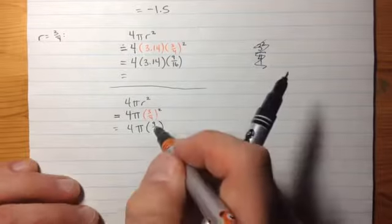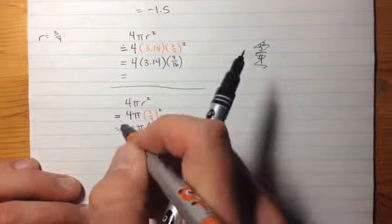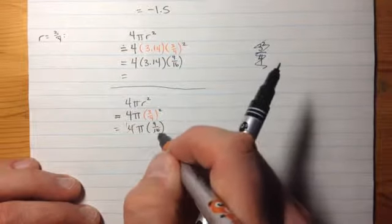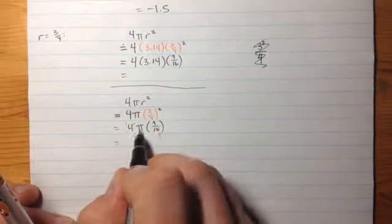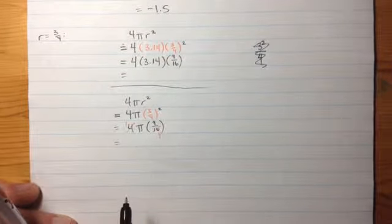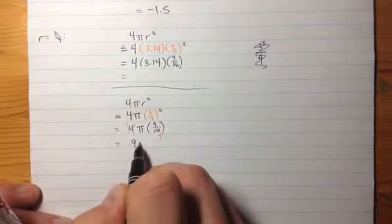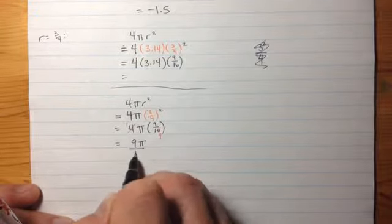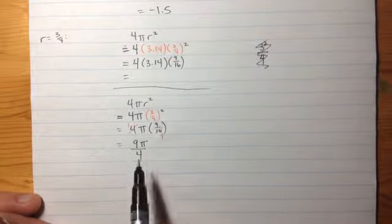And now, this is a great time to do some cancelling. This 4 cancels with this 16, or what we're really doing is dividing away a 4 out of each. This will be left with a 4. And I have a pi. I have 1 pi and 9 on the top, and 4 on the bottom. That'll be 9 times pi divided by 4, or 9 quarters of pi. That's a pretty good way to write that.